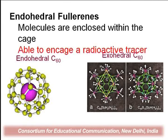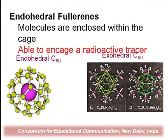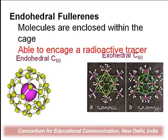The second type is endohedral fullerenes — endo means inside — where molecules are enclosed within the cage. In the diagram on the left-hand side, the endohedral type is shown; this type of fullerene is used to encage a radioactive tracer, and molecules can be stored inside the Buckminster fullerene ball. So these two types are exohedral, where other molecules attach at the outer side, and endohedral, where molecules can be put inside the Buckminster fullerene.